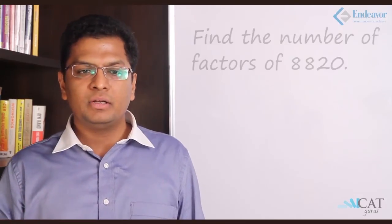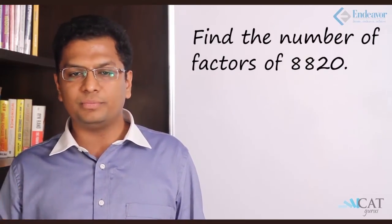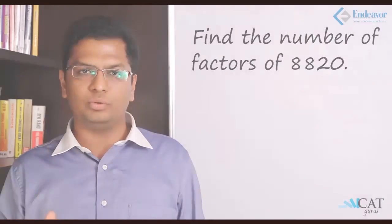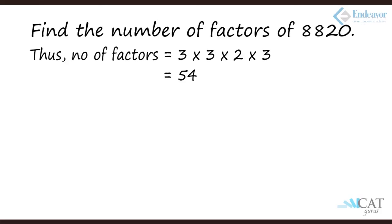Let's expand further. Find the number of factors of 8820. Breaking 8820 down: 8820 = 2² × 3² × 5¹ × 7². The number of factors is (2+1) × (2+1) × (1+1) × (2+1) = 3 × 3 × 2 × 3 = 54. So 8820 has 54 different factors.